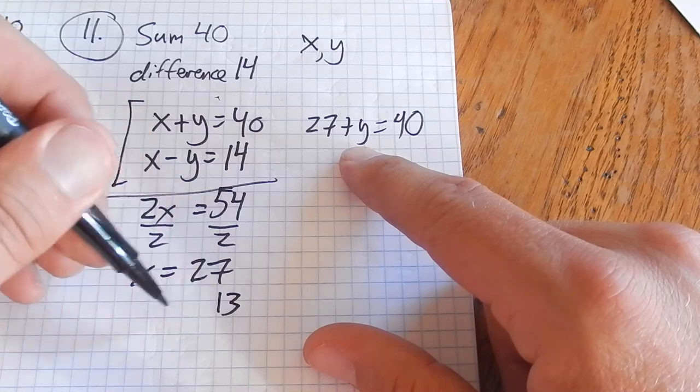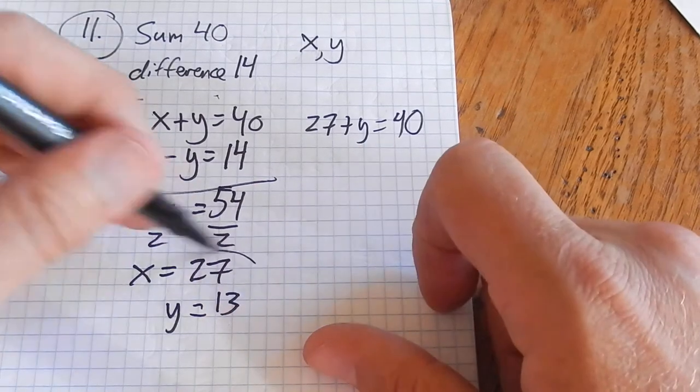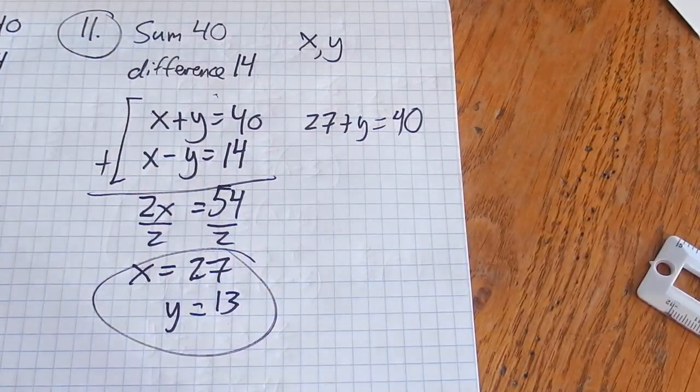And that's 13. So my two numbers are 27 and 13.